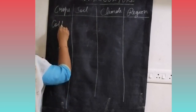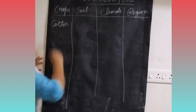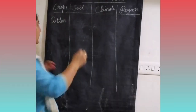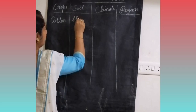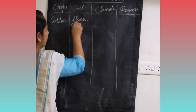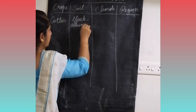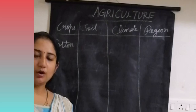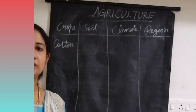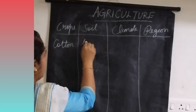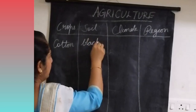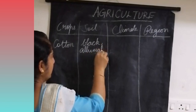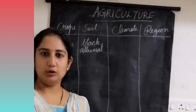What is the first fiber crop? Cotton. Cotton grows well in black and alluvial soil.